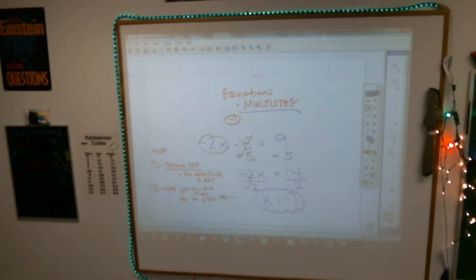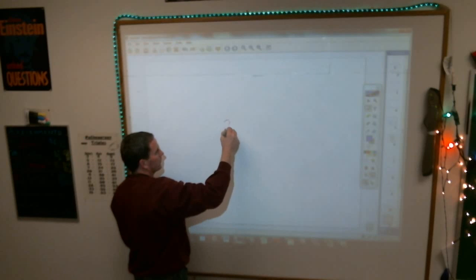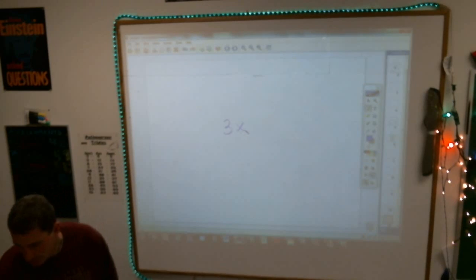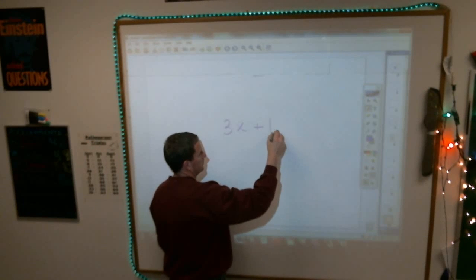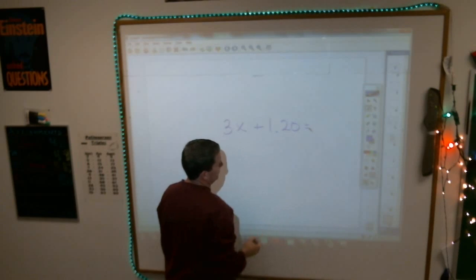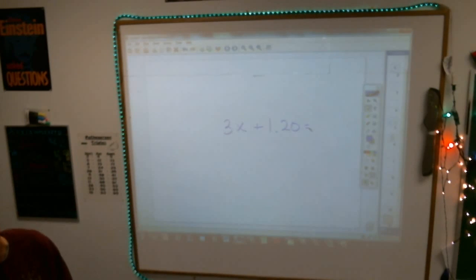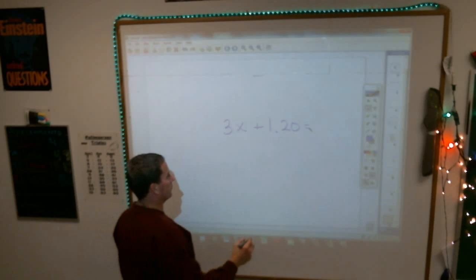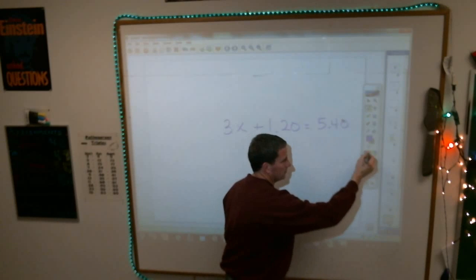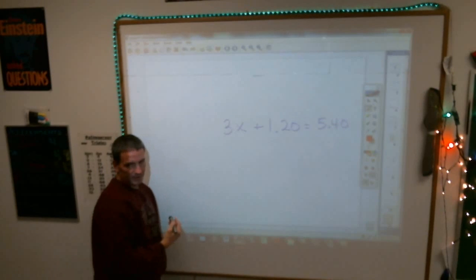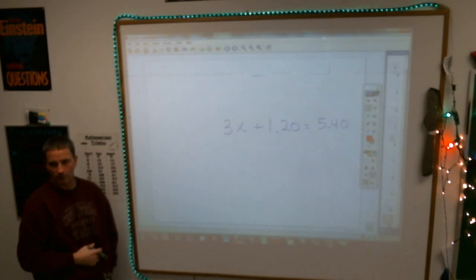For example, here's one, Cameron. Three x plus 1.20. And I'm going to say, no, it's probably not easier once all is set. Now equals 5.40. I mean, if you like, Cameron, I'll let you do it by inspection, and I'll do it the way I did. We'll see who gets there quicker.